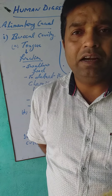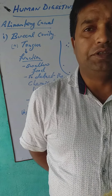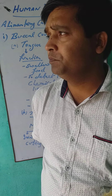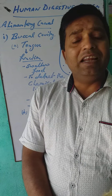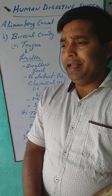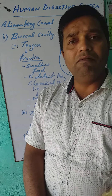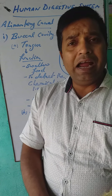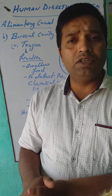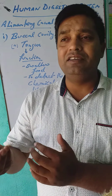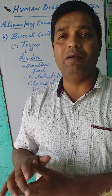Good afternoon, my dear students. Today we are going to discuss about the digestive system. As we know, in the digestive system we have two things: the alimentary canal and associated glands involved in it. Complex food should be converted into simple water-soluble food. For this, we must understand the internal anatomy structure of our body.